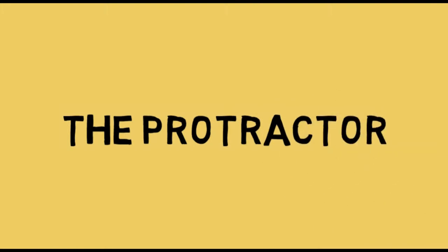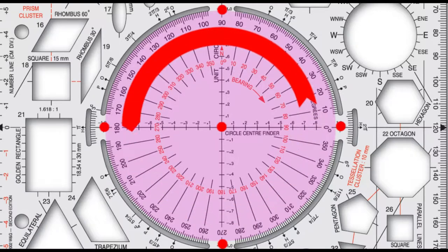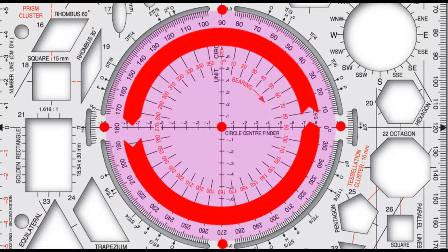The protractor. At the heart of the template is a very useful 360 degree protractor. A learner can easily draw the Cartesian plane by plotting five points across the x and y axis. Reading the protractor anticlockwise, the learner can now sketch angles from 0 to 180 degrees, and then the reflex angles from 180 to 360 degrees.